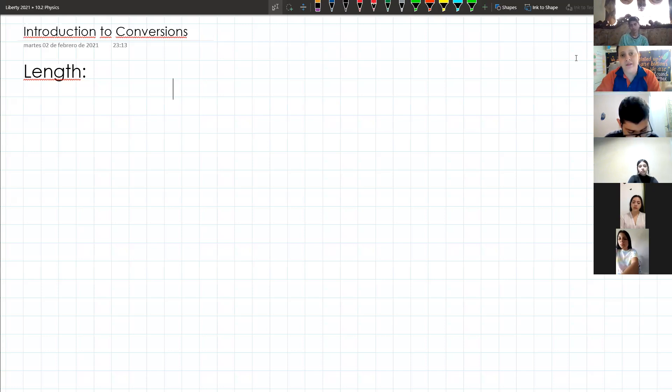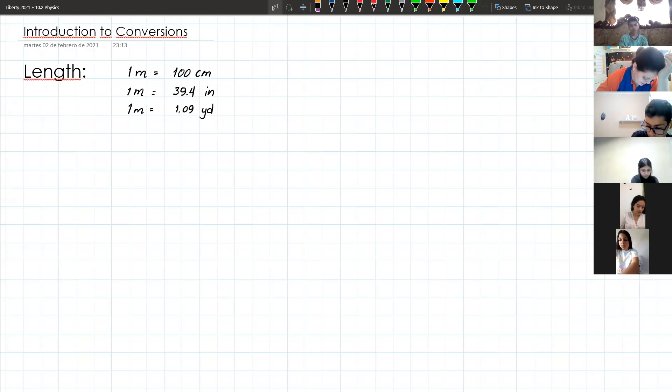The main unit to express length that we use is the meter. So we're going to start with the meter. One meter is equal to 100 centimeters. That is one of the most useful ones. One meter is also equal to 39.4 inches. One meter is equal to 1.09 yards. And this one I didn't give to the other grade because I kind of forgot. And one meter is equal to 3.28 feet. That is one of the most useful ones.